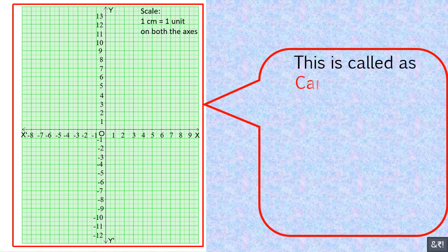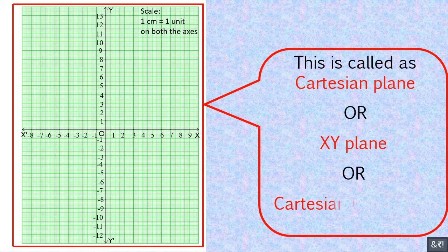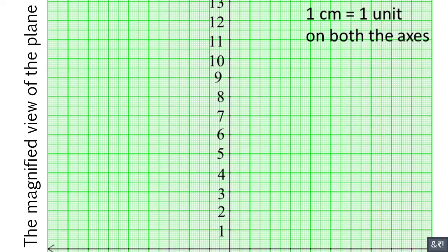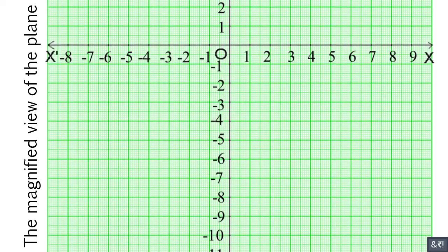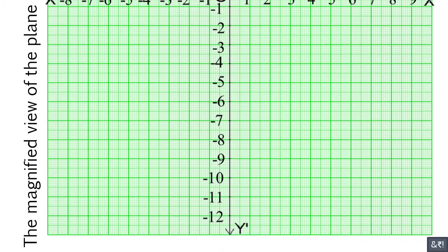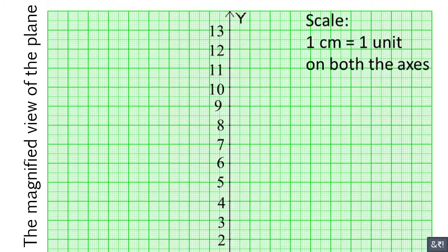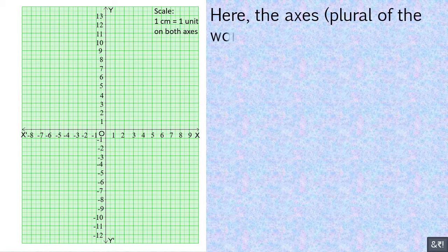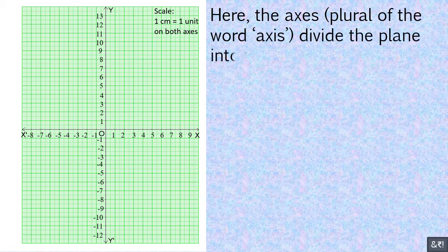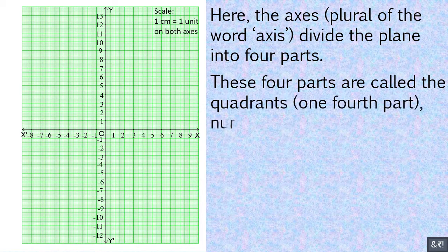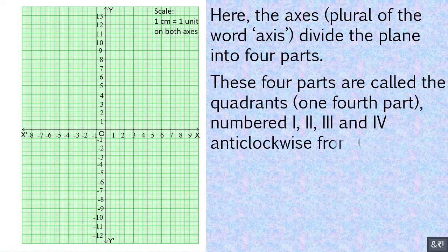This is called the Cartesian plane, or x-y plane, or Cartesian coordinate system. The magnified axes — plural of the word axis — divide the plane into 4 parts. These 4 parts are called quadrants, numbered 1st, 2nd, 3rd, and 4th anti-clockwise from the positive x-axis direction (OX).